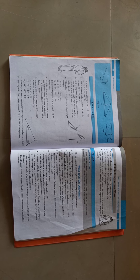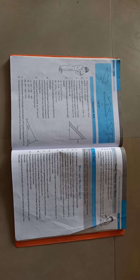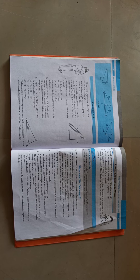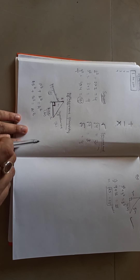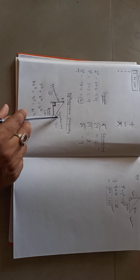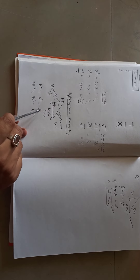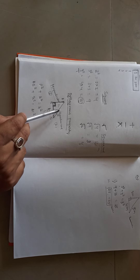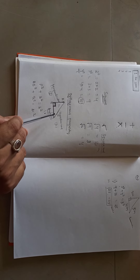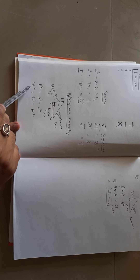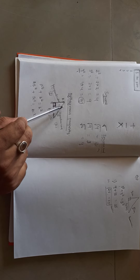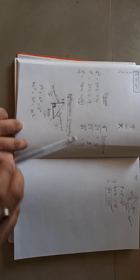In the previous class we discussed Pythagoras property. The base, perpendicular, and hypotenuse of a right triangle satisfy: p² + b² = h², meaning this side squared plus this side squared equals this side squared. This is the Pythagorean property and it is only applicable for a right angle triangle. We can also write it as AB² + BC² = AC².